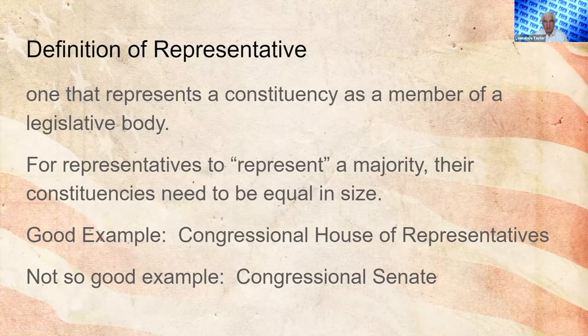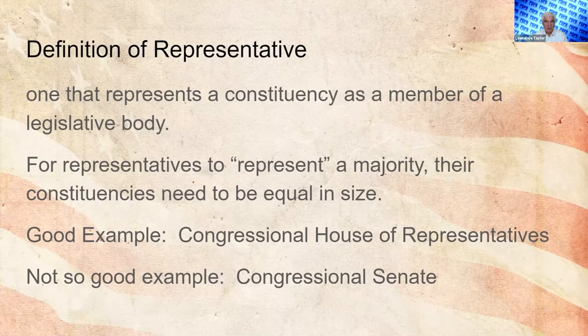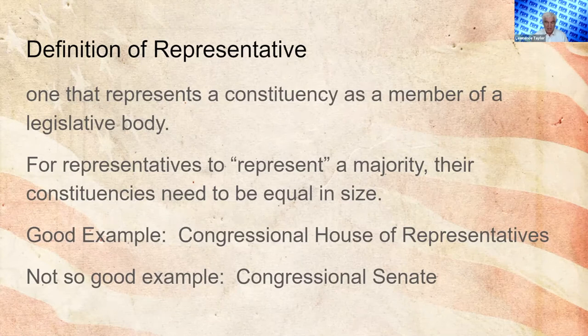When states shrink in population, their number of congressional districts go down, and states whose population increases, their congressional districts go up. A not-so-good example is the Congressional Senate, where every state has two senators. A state like California, which has something like 53 congressional districts, has only two senators representing all of those people — the same as Rhode Island, South Dakota, North Dakota, Minnesota, and Wyoming, which are very low population states. So not-so-good representation in the Senate.